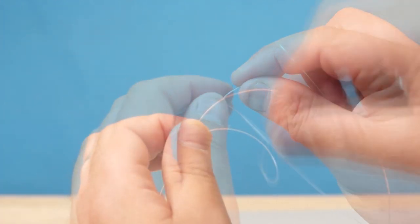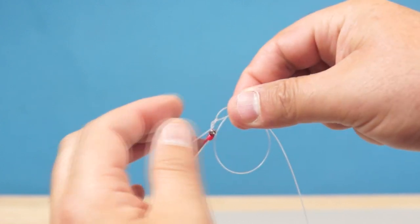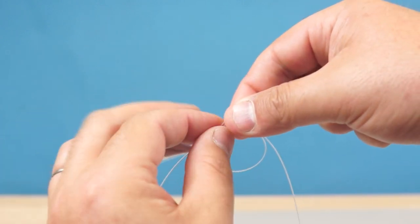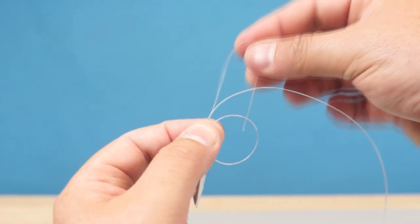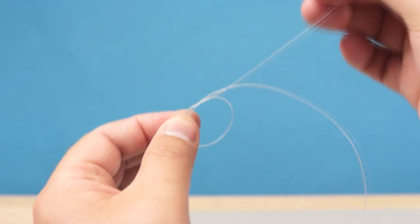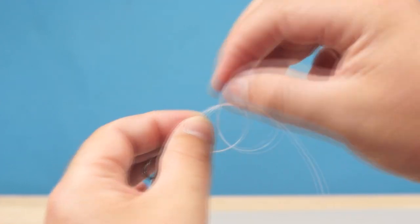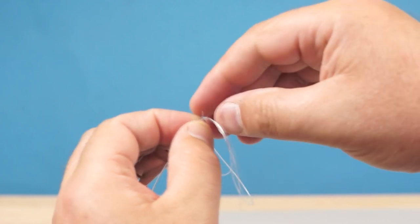To secure the lure I'm going to use its line to make a loop of about a 1 inch diameter. Then pass the end of that line through the loop and around 4 times to make a uni knot.